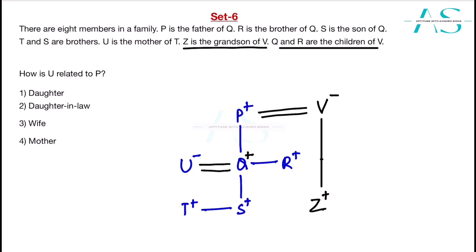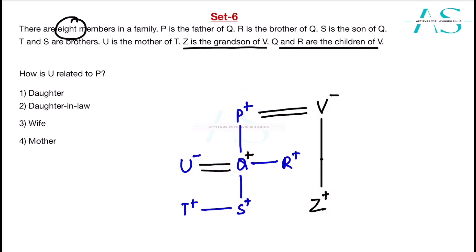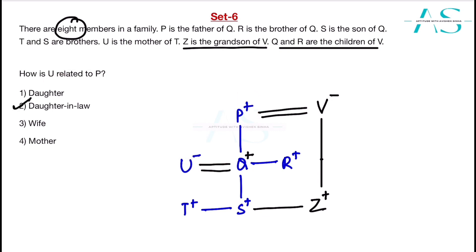Counting all eight members: 1, 2, 3, 4, 5, 6, 7, 8 — that accounts for everyone. Z is therefore a sibling of T and S. How is U related to P? U is Q's wife — so after marriage she is the daughter-in-law of P. The exact answer is daughter-in-law, not daughter.